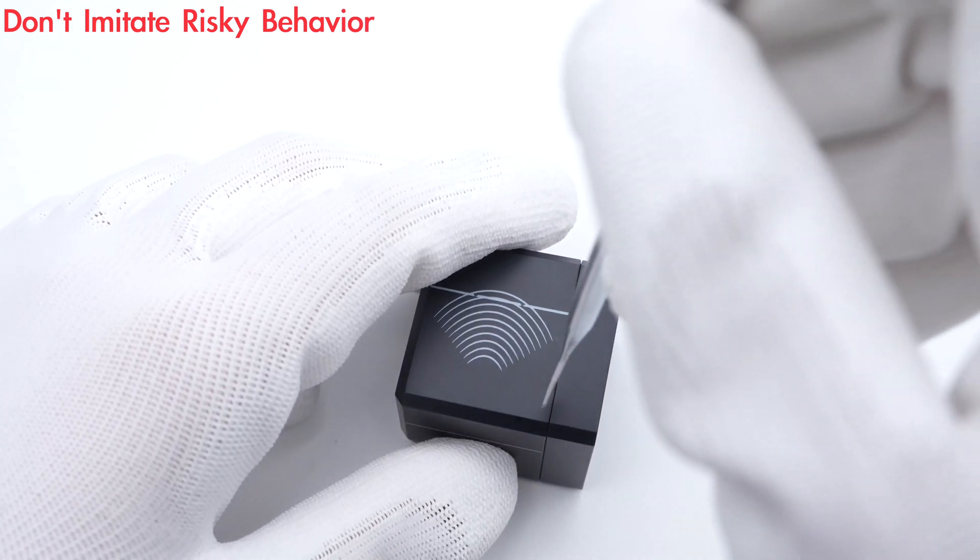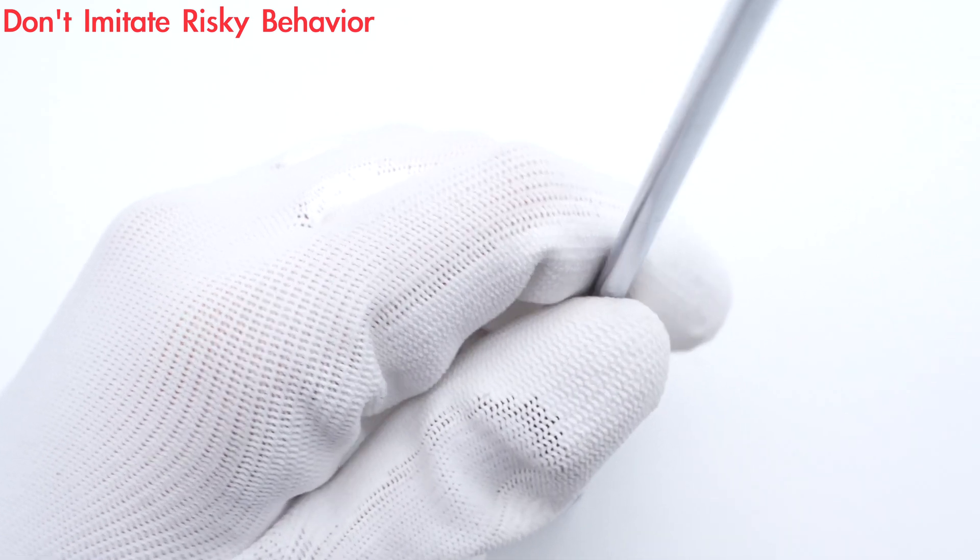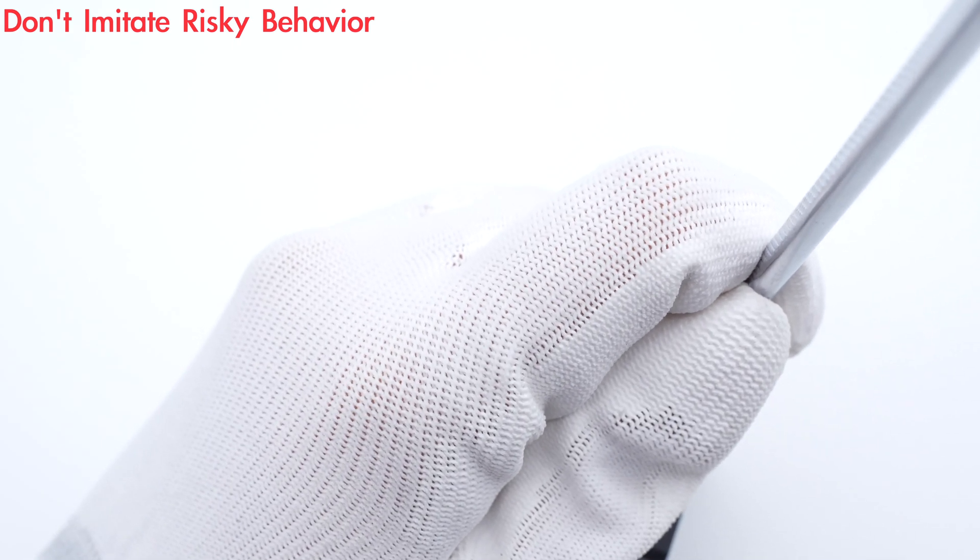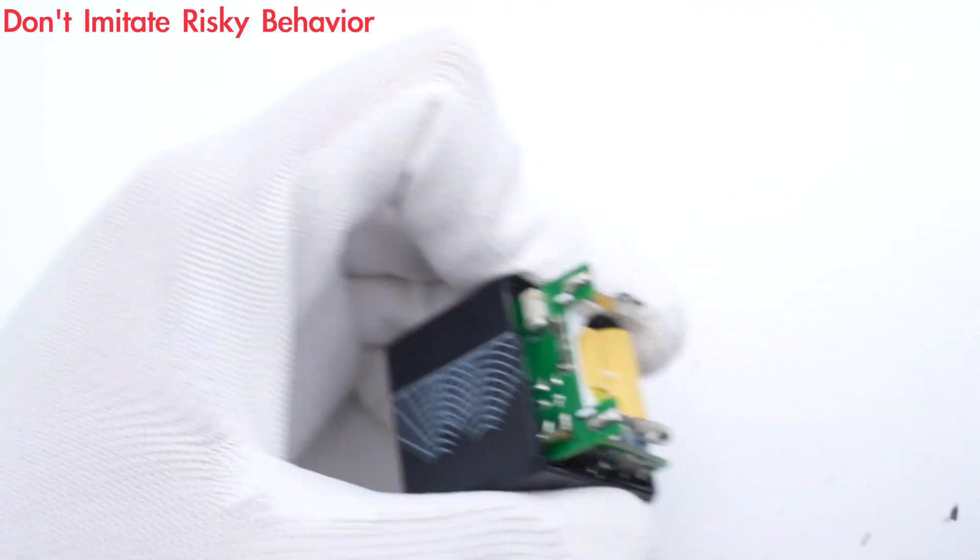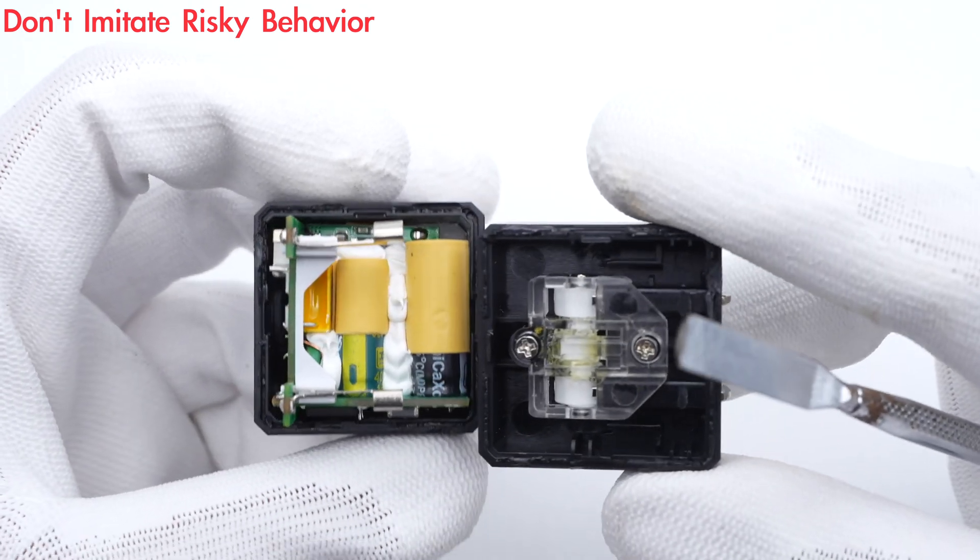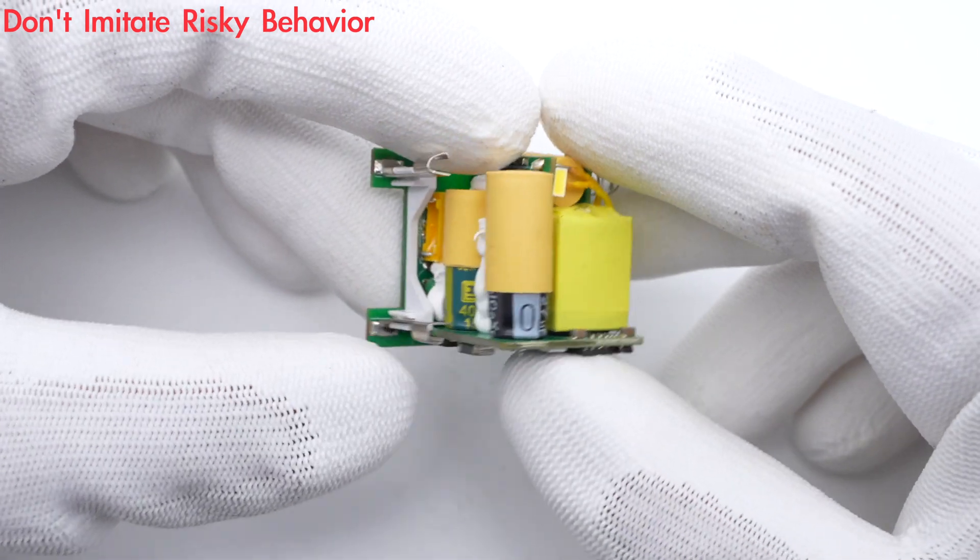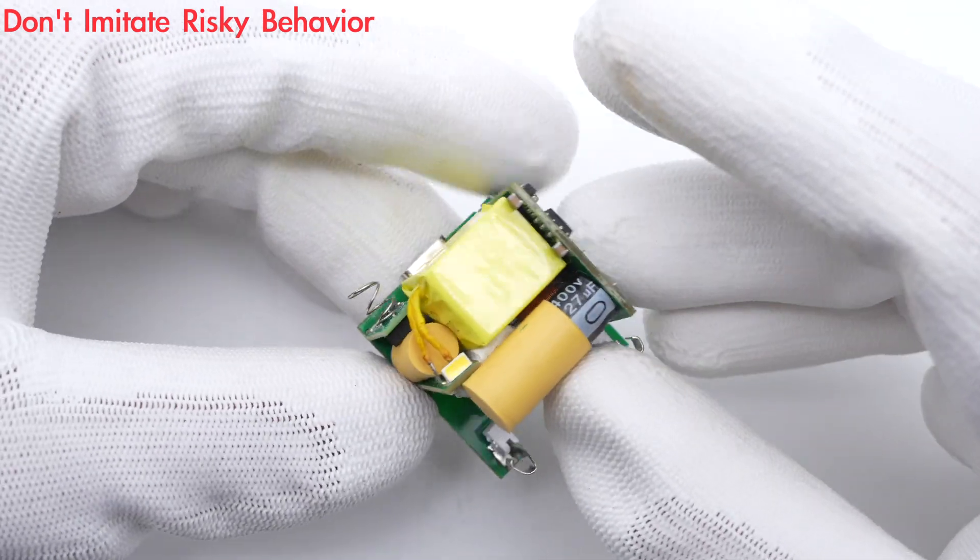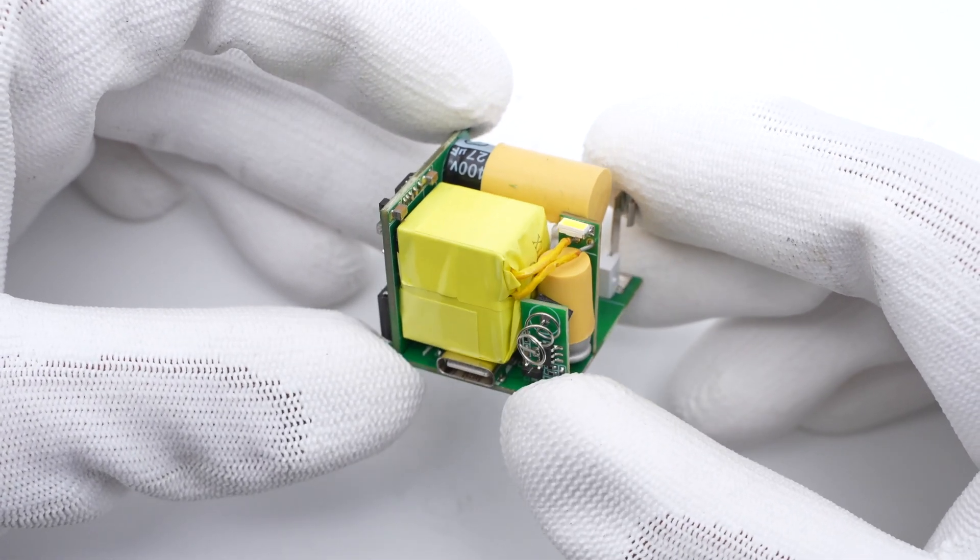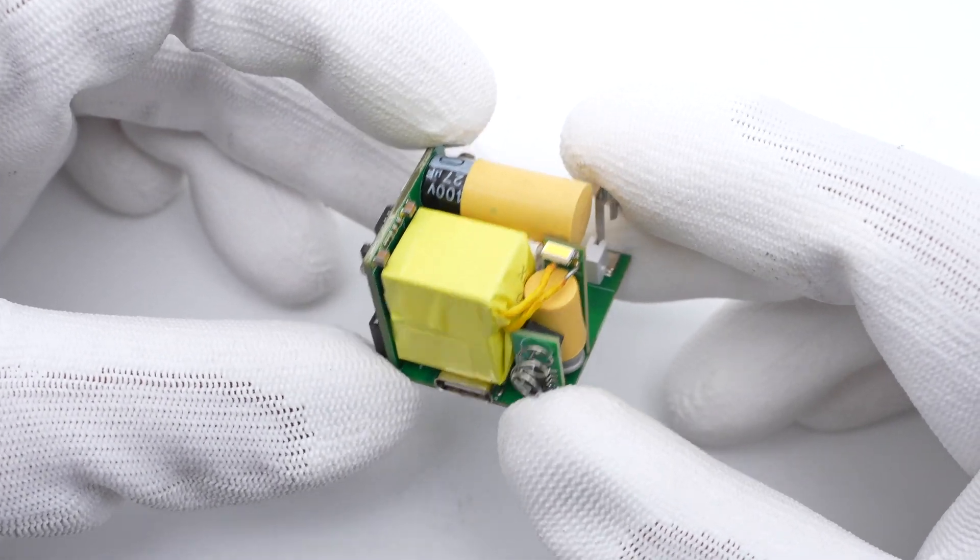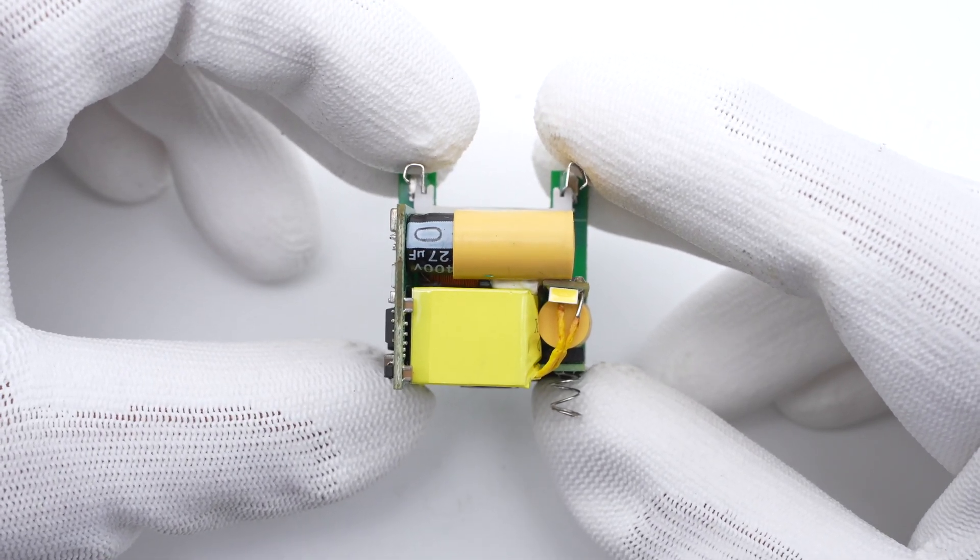Now, we get to the exciting part, the teardown. As usual, start from the input end, and use a spudger to pry along the gap. The input prongs are directly connected to the PCBA module without wires. The PCBA module is composed of 4 PCBs to make full use of space. ChargerLab found it adopts QR flyback topology, which integrates GaN IC and a synchronous rectifier. Now, let's start with the small PCB to introduce various components.